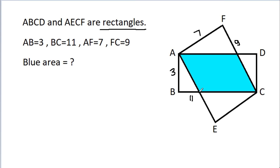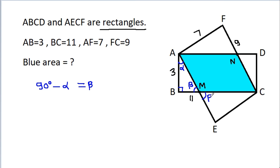Suppose this point is M and this point is N. Now, if this angle is alpha, then this angle will be 90 degrees. So this angle will be 90 degrees minus alpha, and suppose 90 degrees minus alpha is equal to beta. So it will be beta, and this angle will also be beta. This angle is 90 degrees, so this angle will be alpha, and again this angle will be 90 degrees minus alpha, that will be beta.